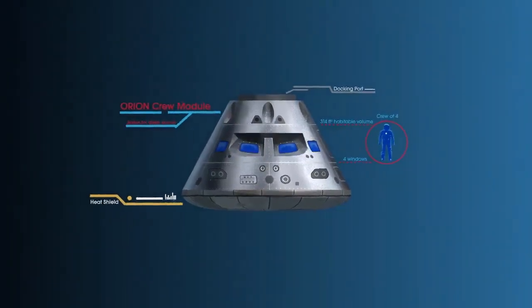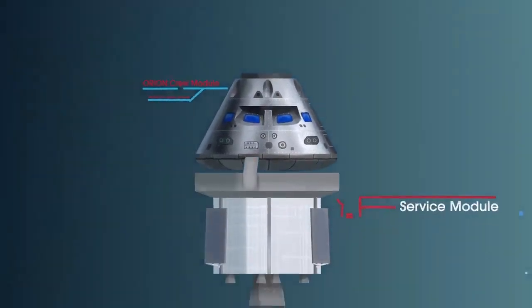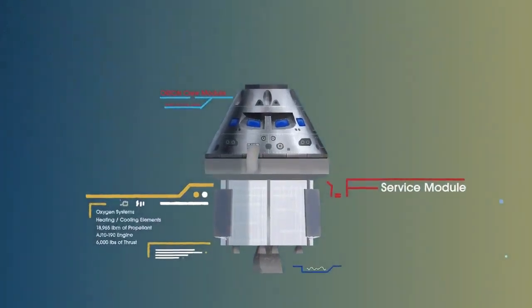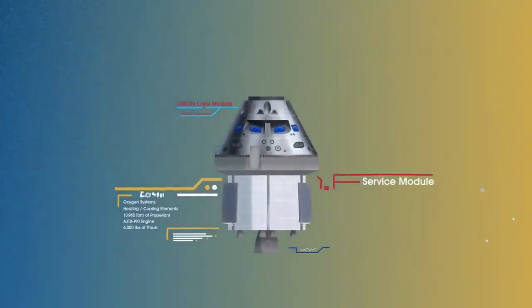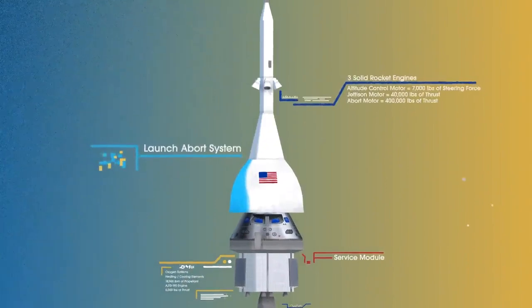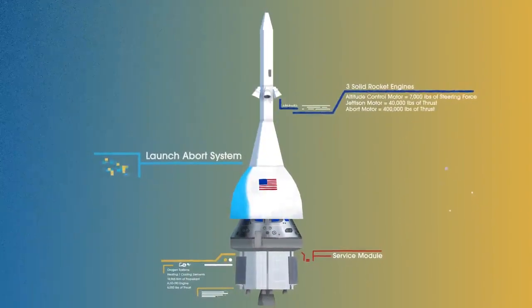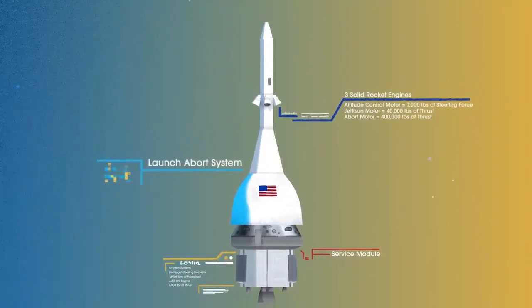The crew module, where up to four astronauts will live and work throughout the flight. The service module, with life-support systems for the crew and its own engine and fuel reserves, and a launch abort system with engines capable of pulling the crew module to safety during launch should anything go wrong.